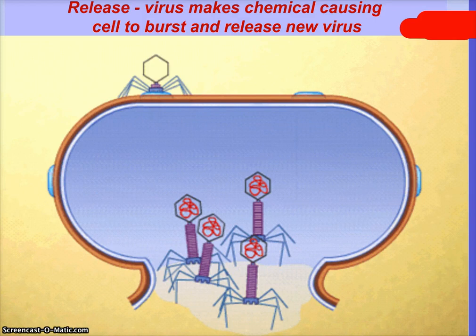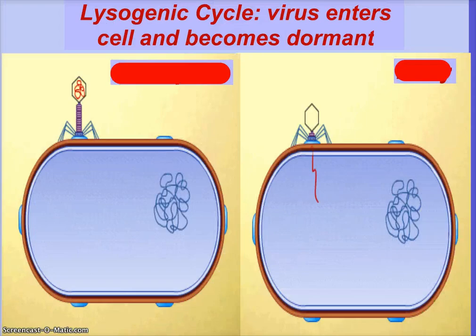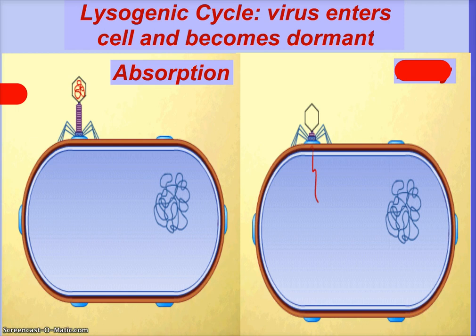What happens to your cell? What's it made up of? Proteins and lipids. What's your cell made up of? Proteins and lipids — your body absorbs it. It's no longer a virus, it's no longer a cell — it's just chemicals. The other thing that can happen: a virus finds a host cell, and the first step is absorption — it binds to the outer portion of the cell. Then entry — inserting its nucleic acid.